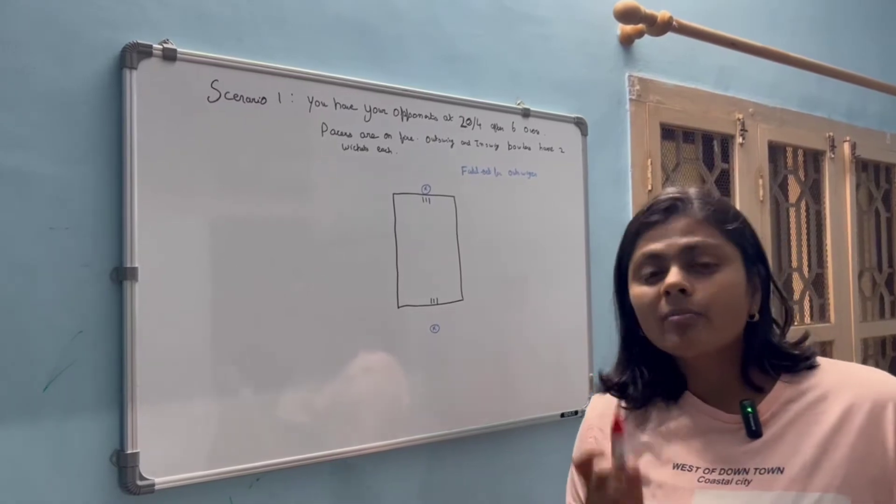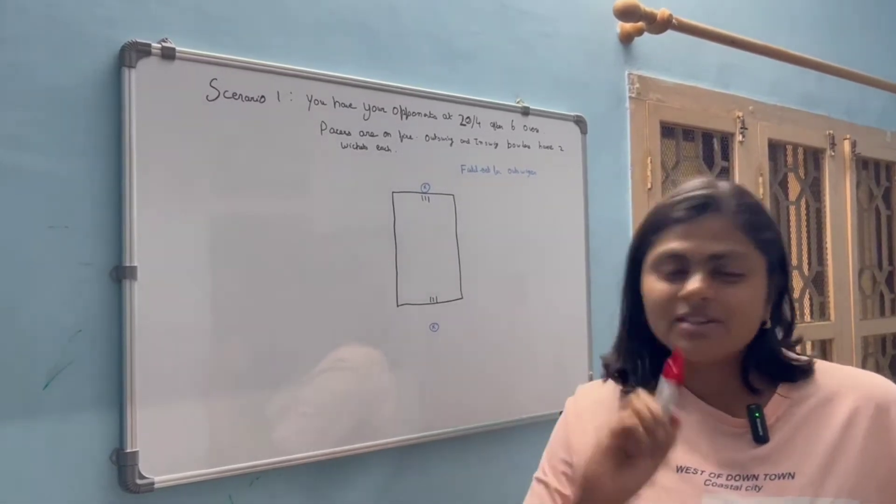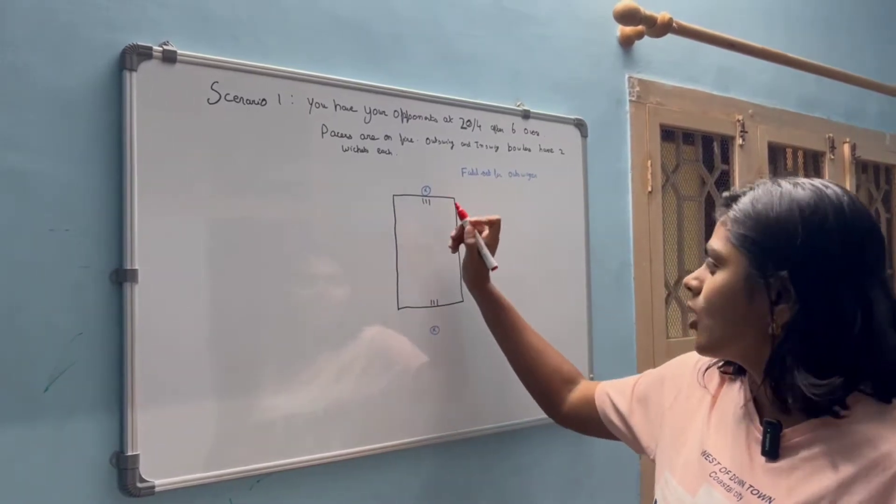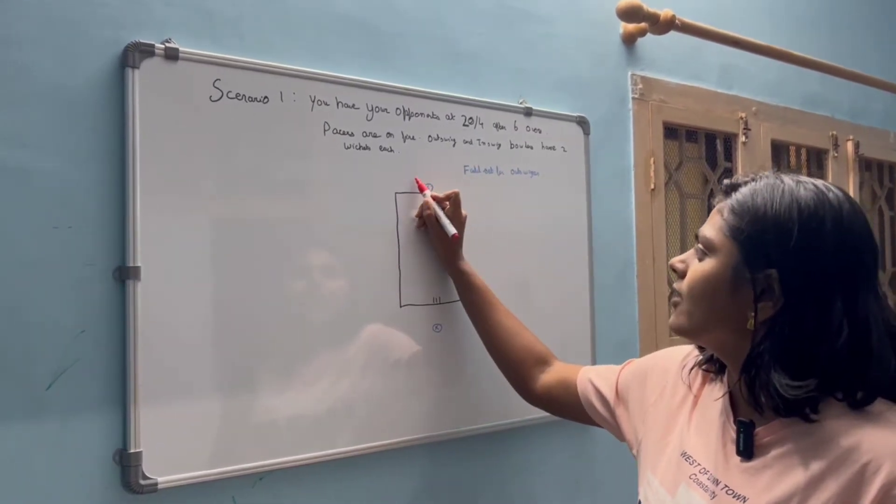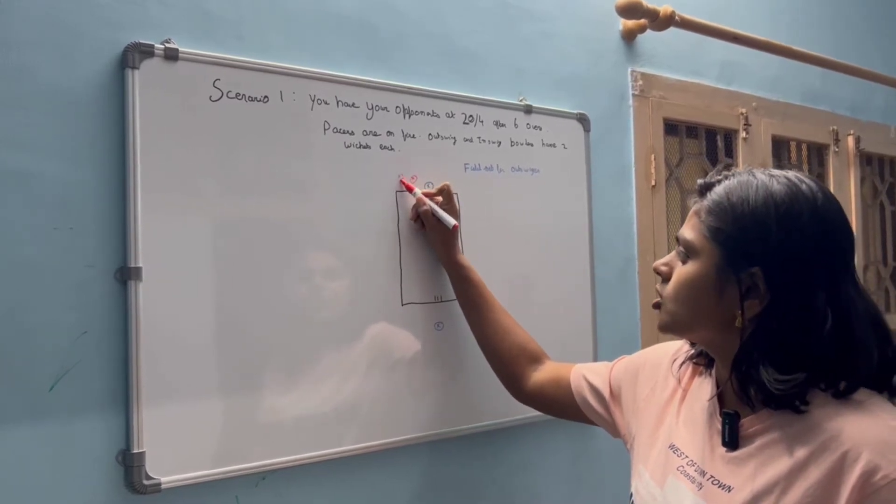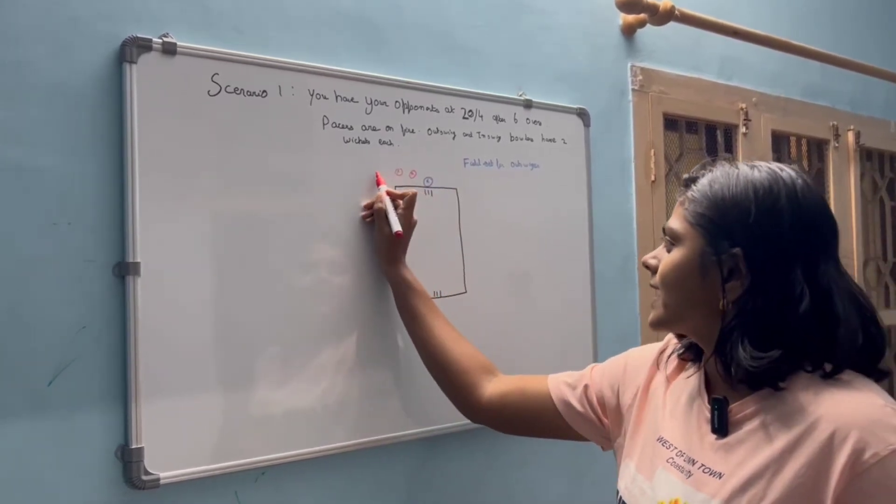So what I will do is I will mark the catching positions with a red marker so that you can understand it better. So definitely for an outswinger I will have a first slip, a second slip for sure, and a catching gully.